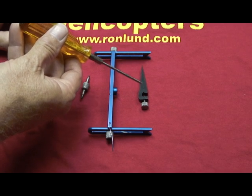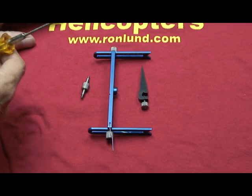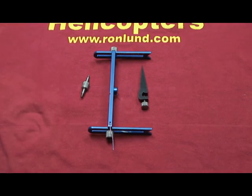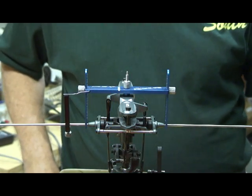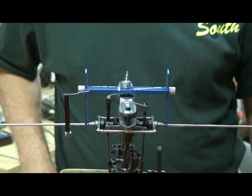This is the pointer which I'll demonstrate in the next section. Okay, I've attached the fly bar lock to the machine.